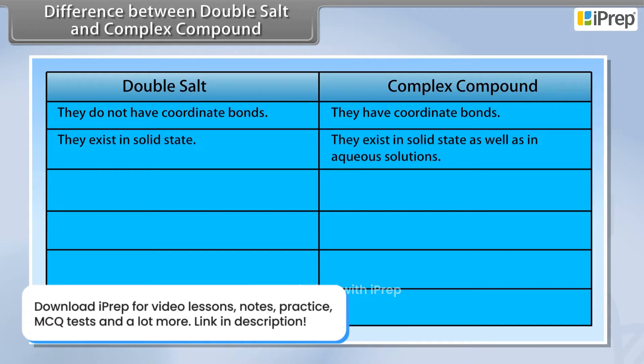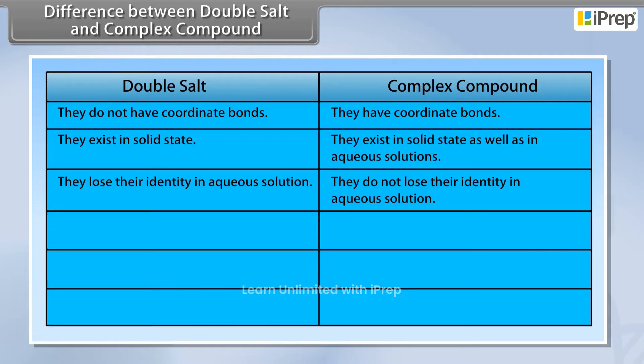Whereas complex compounds exist in solid state as well as in aqueous solutions. Double salts lose their identity in aqueous solution, whereas complex compounds do not lose their identity in aqueous solution.